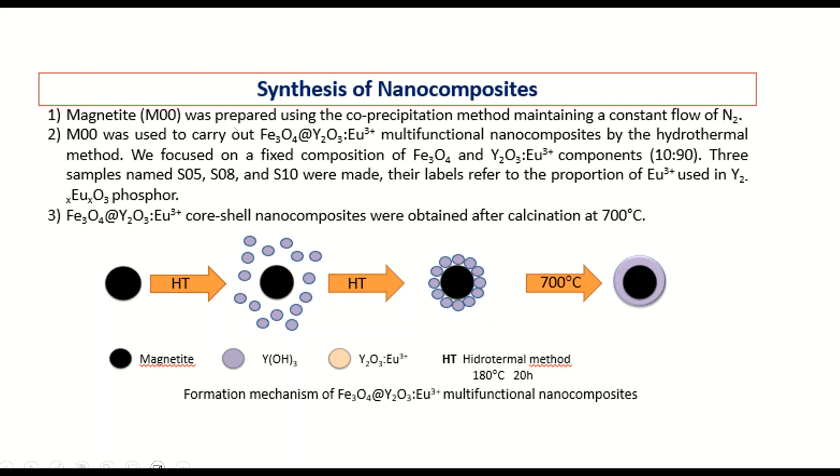In this step, we obtained a core-shell structure like this. But, we need to apply calcination because we wanted to improve the luminescent characteristics of this material.